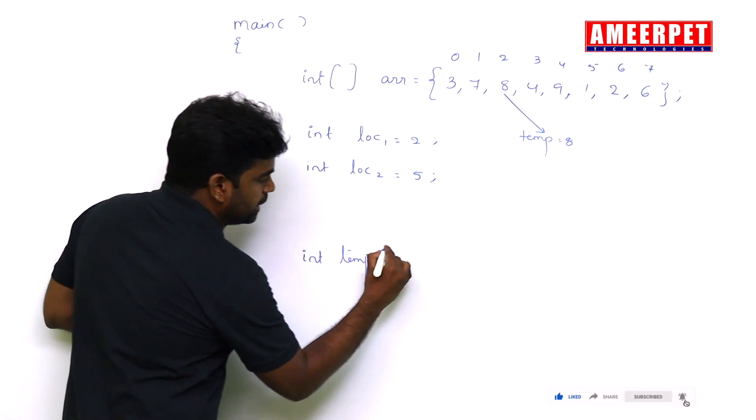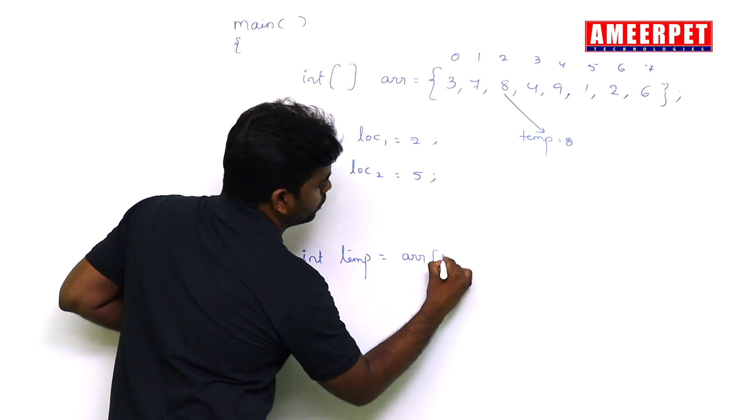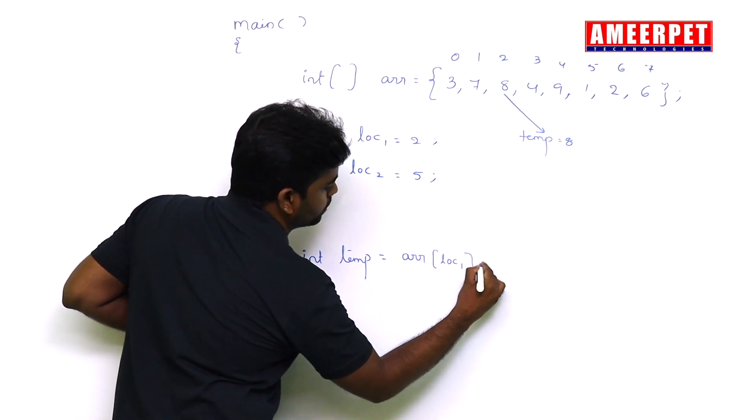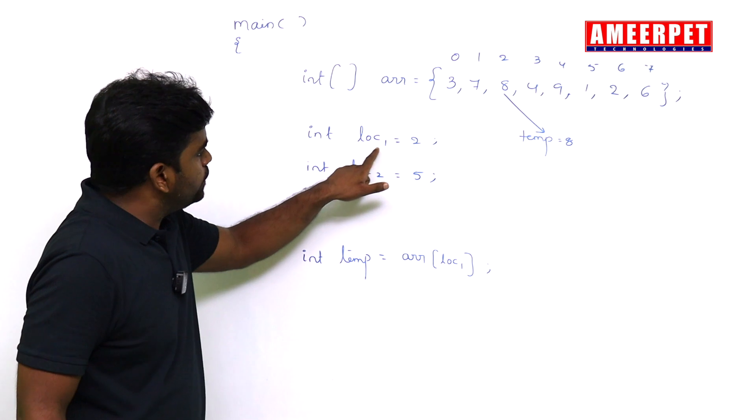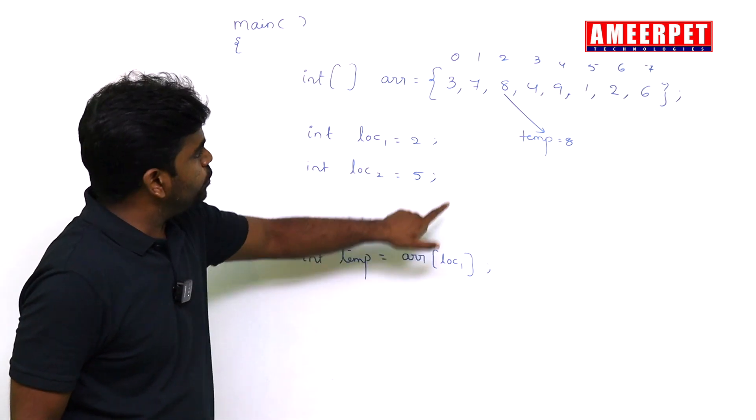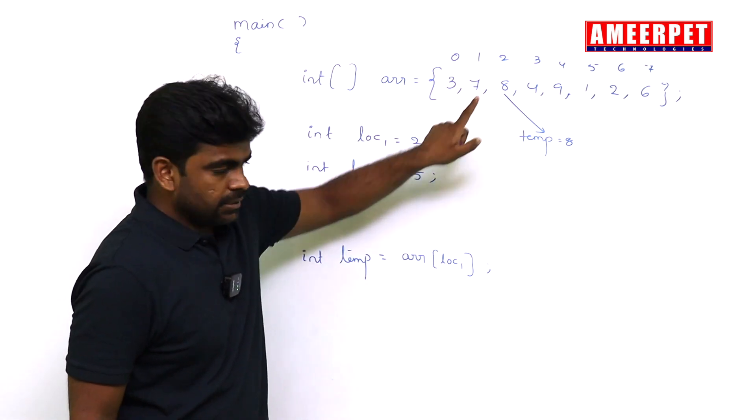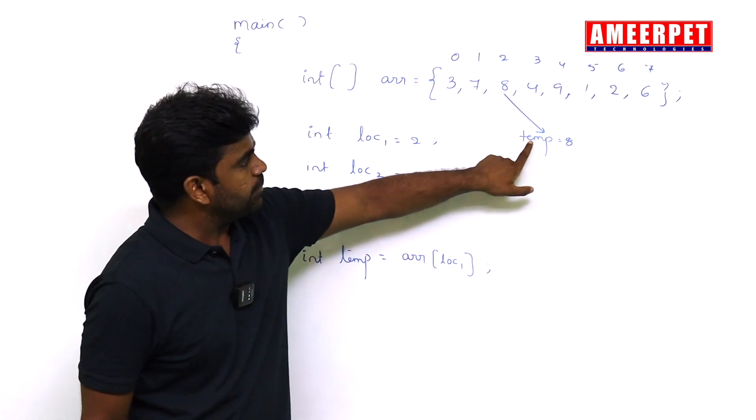So this value I want to store into this location. So here, that ARR of location 1 value is 2. Location 1 value is 2. ARR of 2 value is 8. That 8 will go and store into temp.